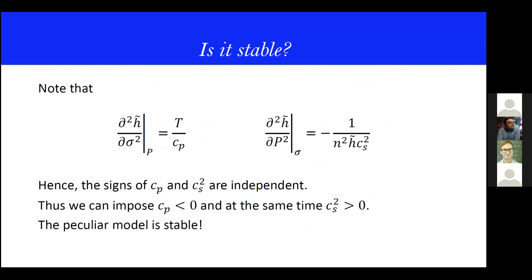So in principle there is nothing else. Now I make an observation: if I take the enthalpy per particle and take the second derivative with respect to the entropy, I get something that contains the specific heat. If instead I make the second derivative with respect to pressure, I obtain something that contains the speed of sound squared. These are diagonal elements of the Hessian of the entropy with respect to different variables, and so it's easy to understand that they are completely independent partial derivatives — their signs are not related. You can also check with a polynomial dependence. So I am completely free to impose the specific heat negative while the speed of sound squared is positive, and my model is hydrodynamically stable.